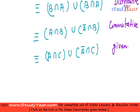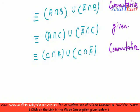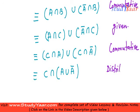Now I am again going to use the commutative property. I am going to write it as: c intersection a, union c intersection complement of a. Next, I am going to use the distributive property. So this is c intersection a union a bar. This is the expansion of the distributive property, and I can write it like this. I have used the distributive property to reach this step.